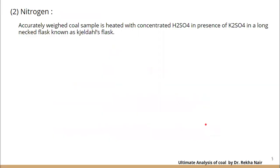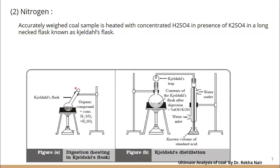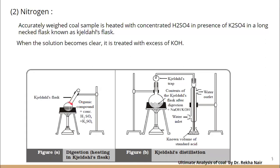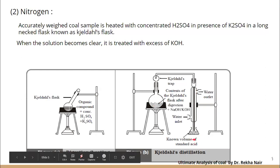Next, we will calculate the percentage of nitrogen present in coal. For this we use a Kjeldahl flask, which is a long-necked flask. A known weighed amount of coal sample is heated with concentrated H2SO4 and K2SO4. After heating, when the solution becomes clear, it is treated with excess KOH. This Kjeldahl distillation flask is connected to a condenser, and the product is absorbed in an acid solution in a conical flask.